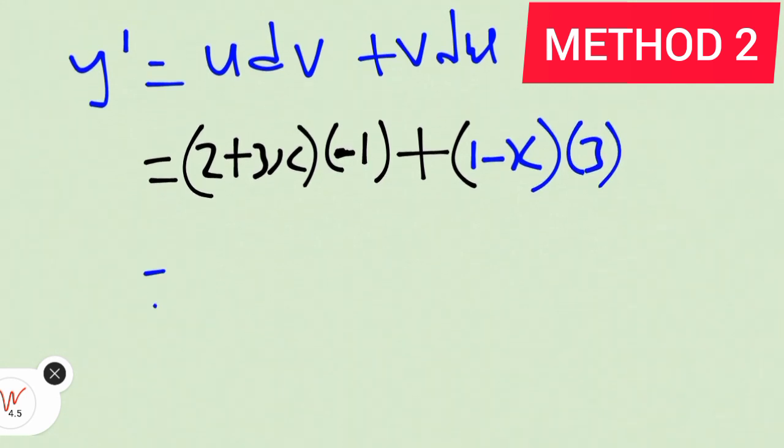Let's open this bracket and evaluate our answer. So I have minus 1 times 2, we have minus 2. Minus 1 times 3x, we have minus 3x. Plus 3 times 1, we have 3. 3 times minus x, minus 3x.